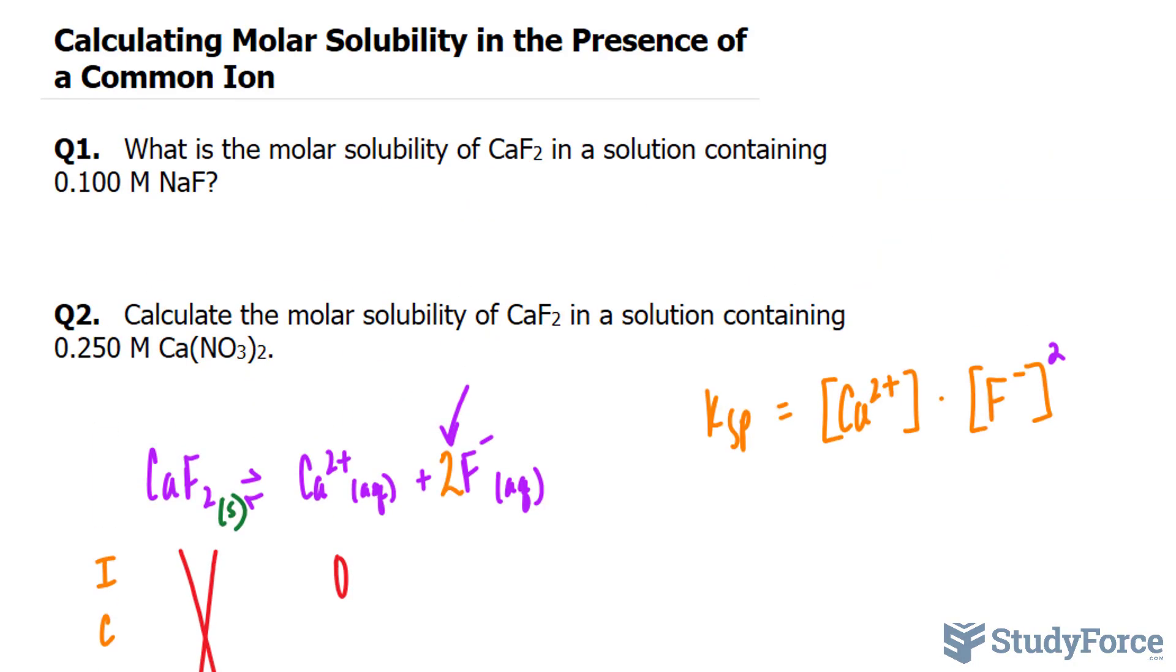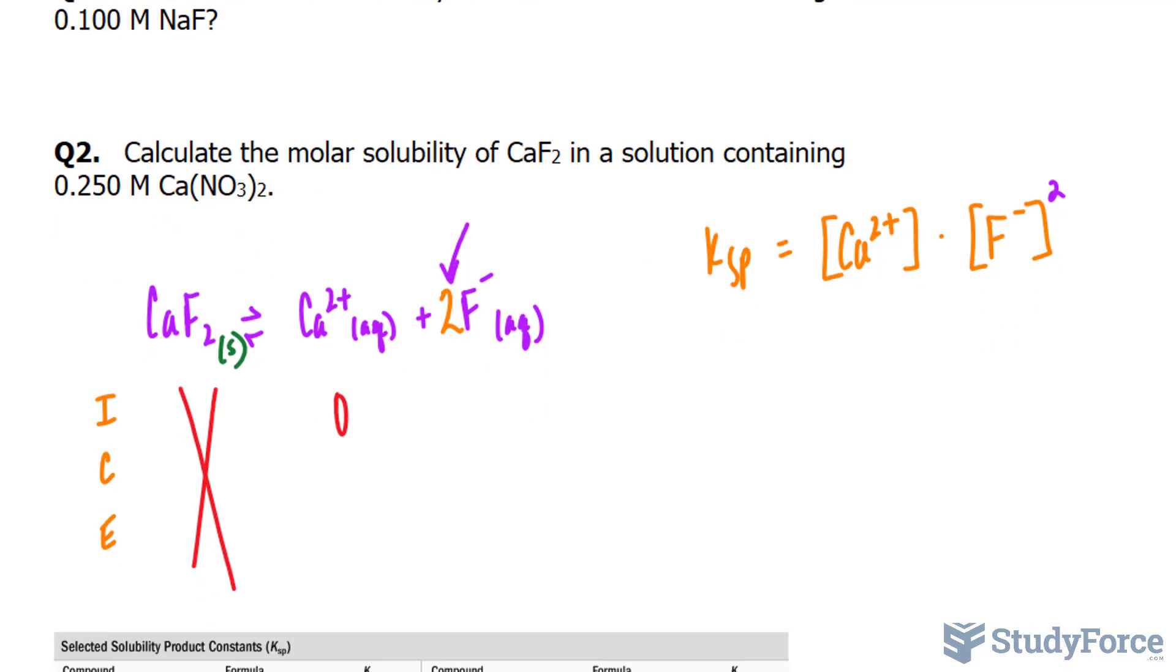And since in the question we're mixing calcium fluoride with NaF, or sodium fluoride, if this breaks down, it breaks down into sodium and fluoride. So we can say that the initial concentration when we mix these two of fluoride is 0.100.